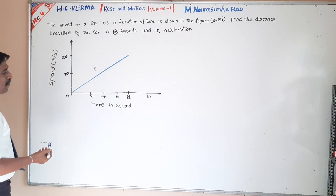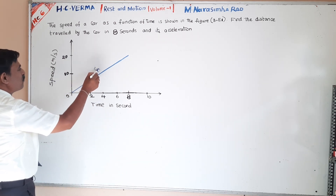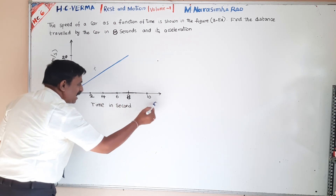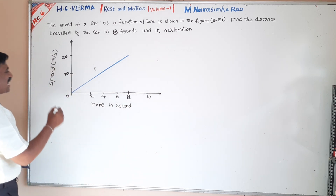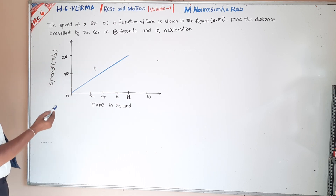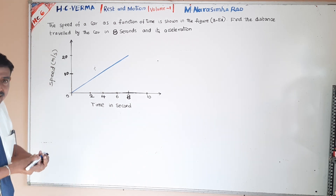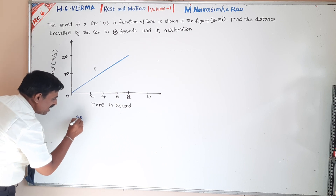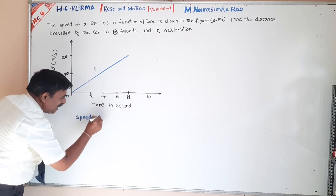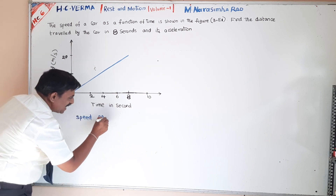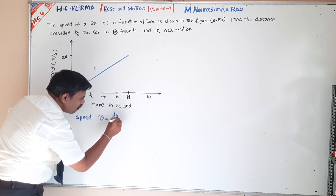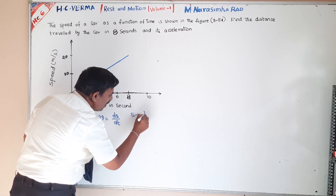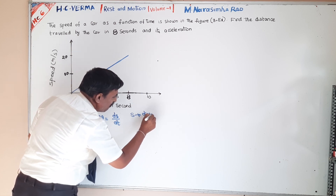In this problem, they have given one graph — what you are calling as a VT graph. Time is taken along the x-axis, speed is taken along the y-axis. We are having one formula: speed V is equals to dS by dt, where S represents the distance travelled.